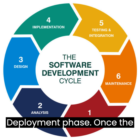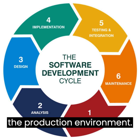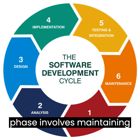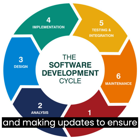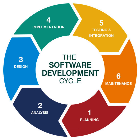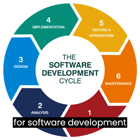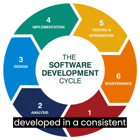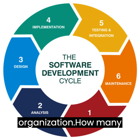Deployment Phase: In this phase, once the software is tested and approved, it is deployed to the production environment. Maintenance Phase: This phase involves maintaining the software, fixing bugs, and making updates to ensure it continues to meet the changing needs of the users and the organization. The SDLC provides a framework for software development teams to work within, ensuring that software is developed in a consistent and structured manner, and that it meets the needs of the users and the organization.